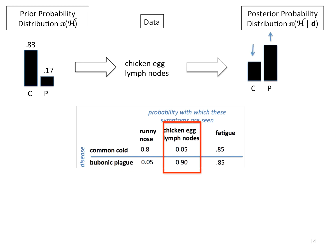Now look at chicken-egg sized lymph nodes. It's far more likely that you'll see these large lymph nodes when you have the plague relative to when you have the cold. So in that case, you should lower the probability that you have a cold and increase the probability that you have the plague. That's how you do your updating.